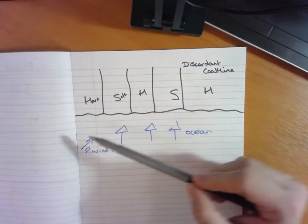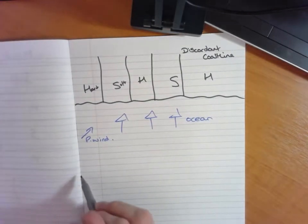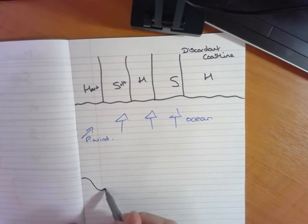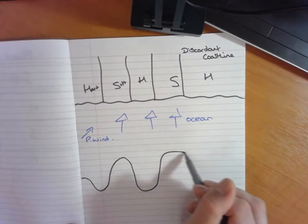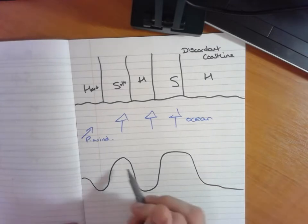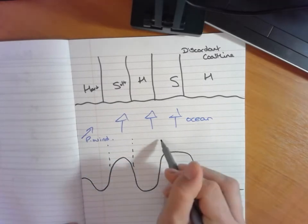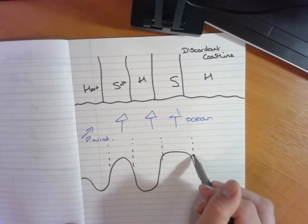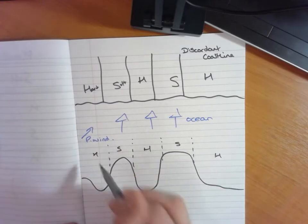So after a significant period of time what you will see with your coastline is the fact that actually you'll end up with these features occurring. And here again if I now draw on our bands of soft and harder rock again, you will notice that actually we have got different features being created.